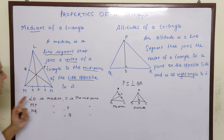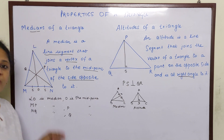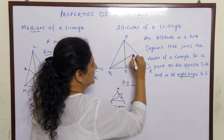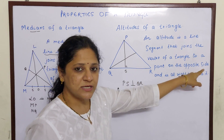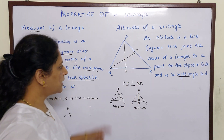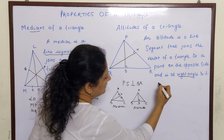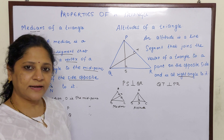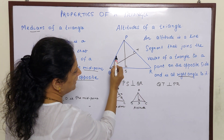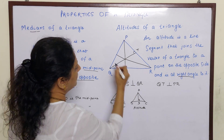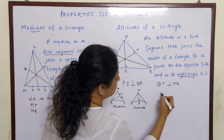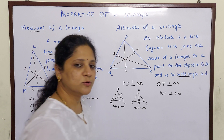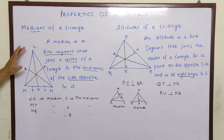Now you understand how to find the difference between median and altitude. Just as you have three medians, you also have three altitudes. From this vertex, if I draw a line segment to the opposite side at a right angle, then QT is an altitude — QT is perpendicular to PR because it forms 90 degrees. In the same way, if I join RU and it forms 90 degrees, then RU is perpendicular to PT. So there are three altitudes which are each perpendicular to the opposite side.